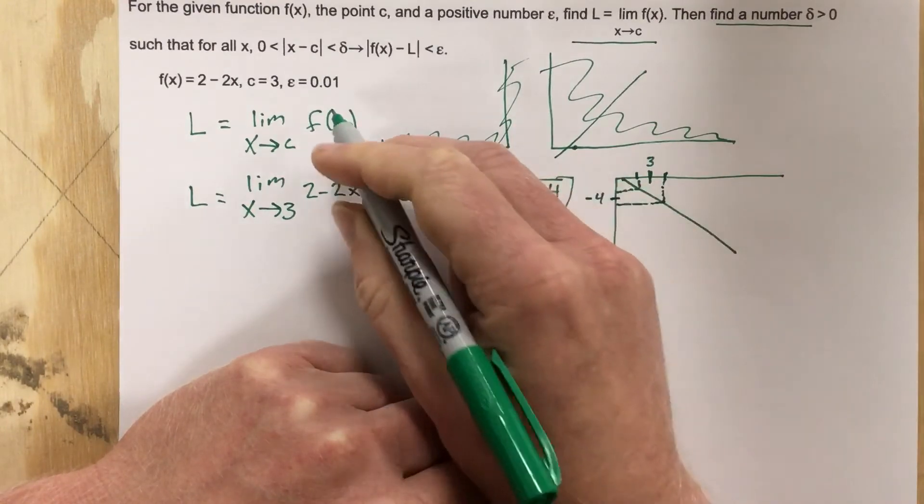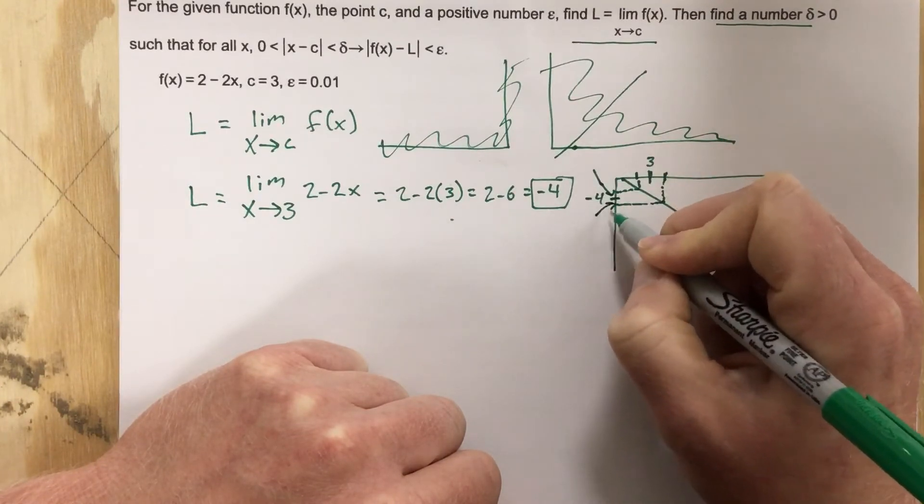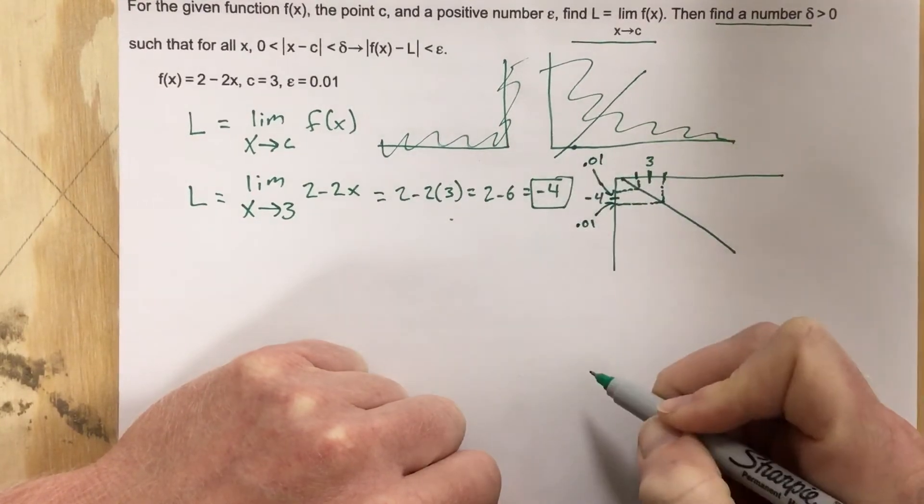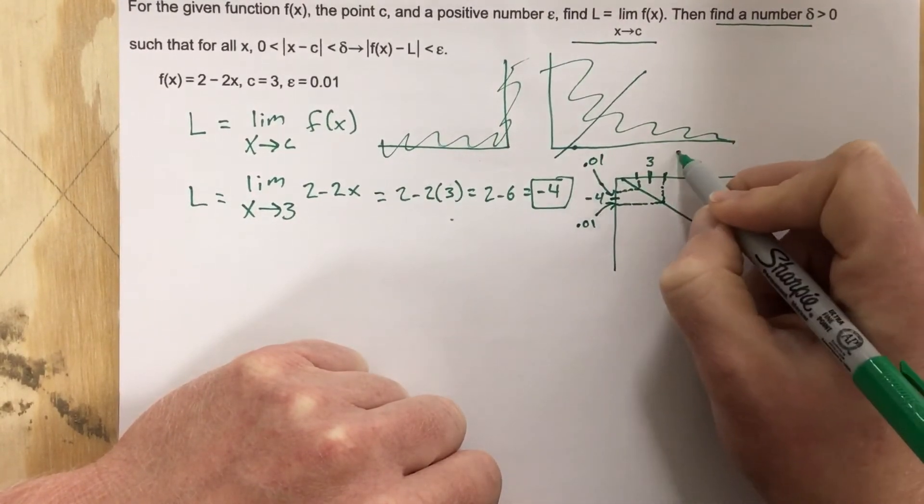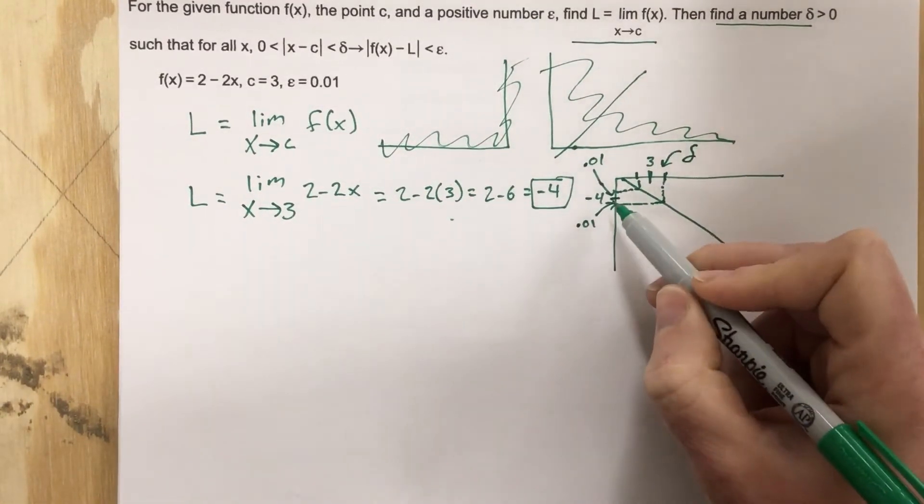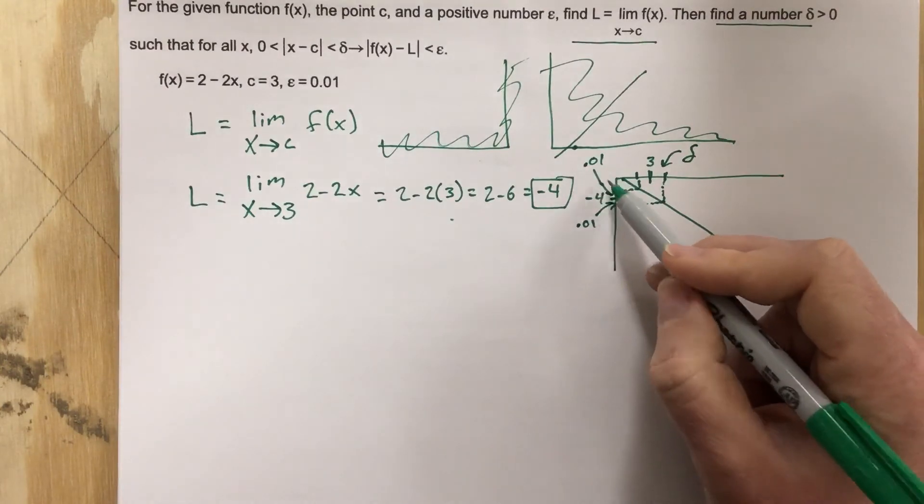And that interval needs to straddle this limiting value, which is negative 4. And they tell us our epsilon is 0.01. And this is 0.01. And we're looking for these delta values here.